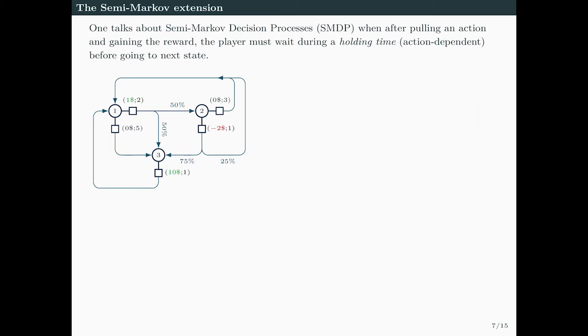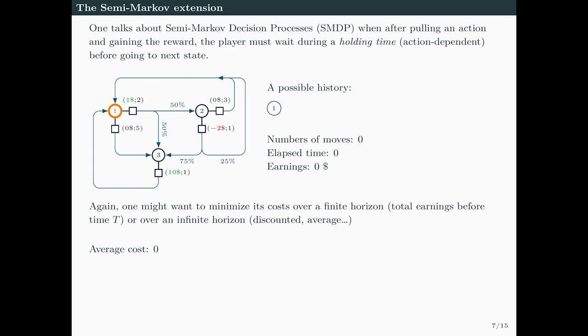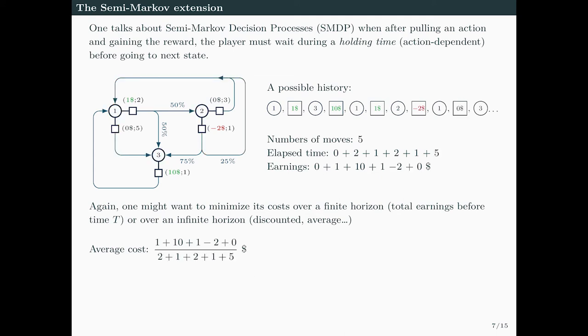One talks about semi-Markov decision processes when after pulling an action and gaining the reward, the player must wait during a holding time which is action dependent before going to the next state. Because some actions consume more time than others, there is a trade-off between earning money and not losing time. Before move 4, you have earned 12 dollars in 4 minutes, and that's how you obtain your average cost. You keep on like that and want to minimize this limit as time tends to infinity.